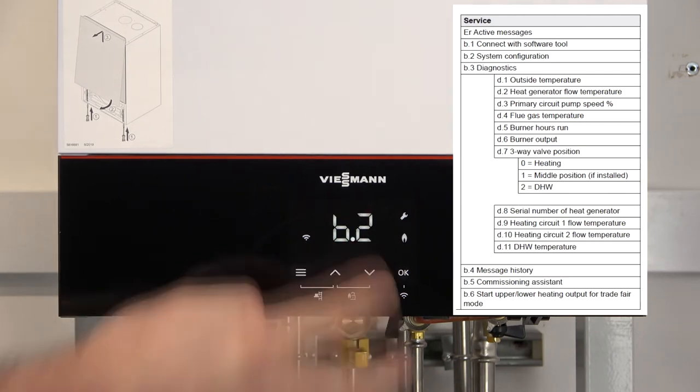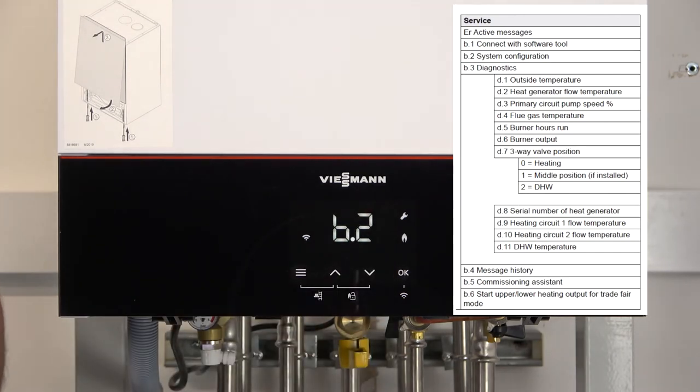To scroll through we press the up and down arrows. So now we come to B2. B2 is our system configuration. This is where we can fine tune the boiler and set up some further parameters to make the boiler run more efficiently. I will be doing another video on specifically what's in B2. Please find this on our YouTube installers channel.